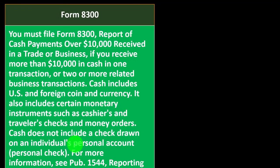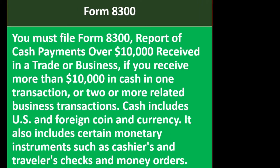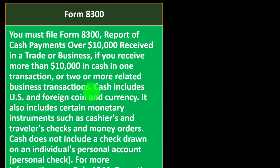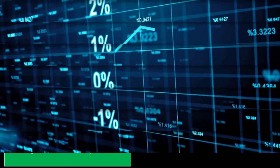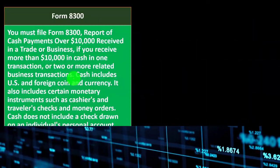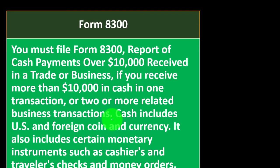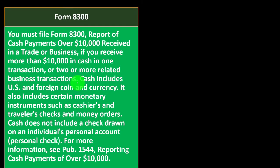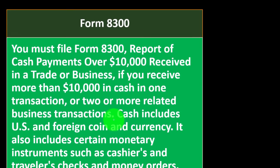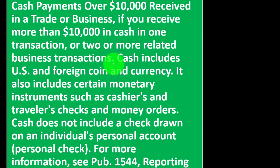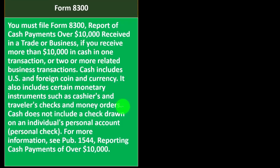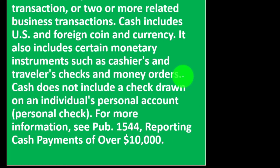Form 8300: you must file Form 8300, Report of Cash Payments Over $10,000 Received in a Trade or Business, if you receive more than $10,000 in cash in one transaction or two or more related business transactions. This $10,000 threshold is getting lower in real dollar terms due to inflation. The government wants to make sure they're getting their piece of larger cash payments. Cash includes U.S. and foreign coin and currency, and also certain monetary instruments such as cashiers' and travelers' checks and money orders.